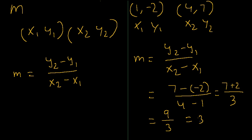Therefore the slope of the line segment passing through the points (1, -2) and (4, 7) is 3.